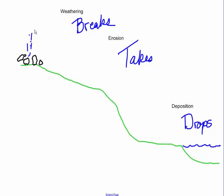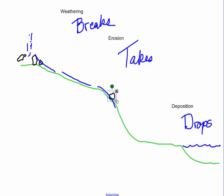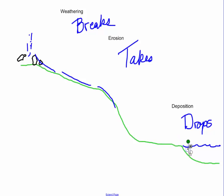Weathering has broken this rock apart. Now this rain is going to be running down the hill, and if it's running fast enough it's going to take some of these rocks with it. The faster the water is moving, the more it can take and the faster it can take it. So erosion moves this rock. The smaller particles can go further — it takes a lot of water to move a big particle. Eventually it gets down here, and as soon as the water slows, like when it enters a big body of water, it's going to deposit or drop it.